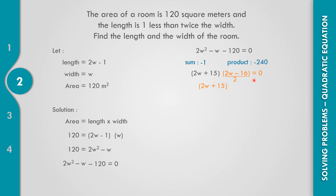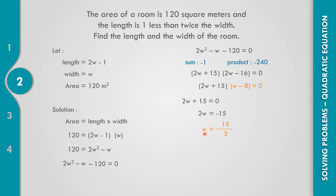Taking the lowest terms, 2W minus 16 gives W minus 8 equals 0. So we can now solve for W. For 2W plus 15 equals 0, that gives 2W equals negative 15, so W equals negative 15 over 2. For W minus 8 equals 0, W equals 8.